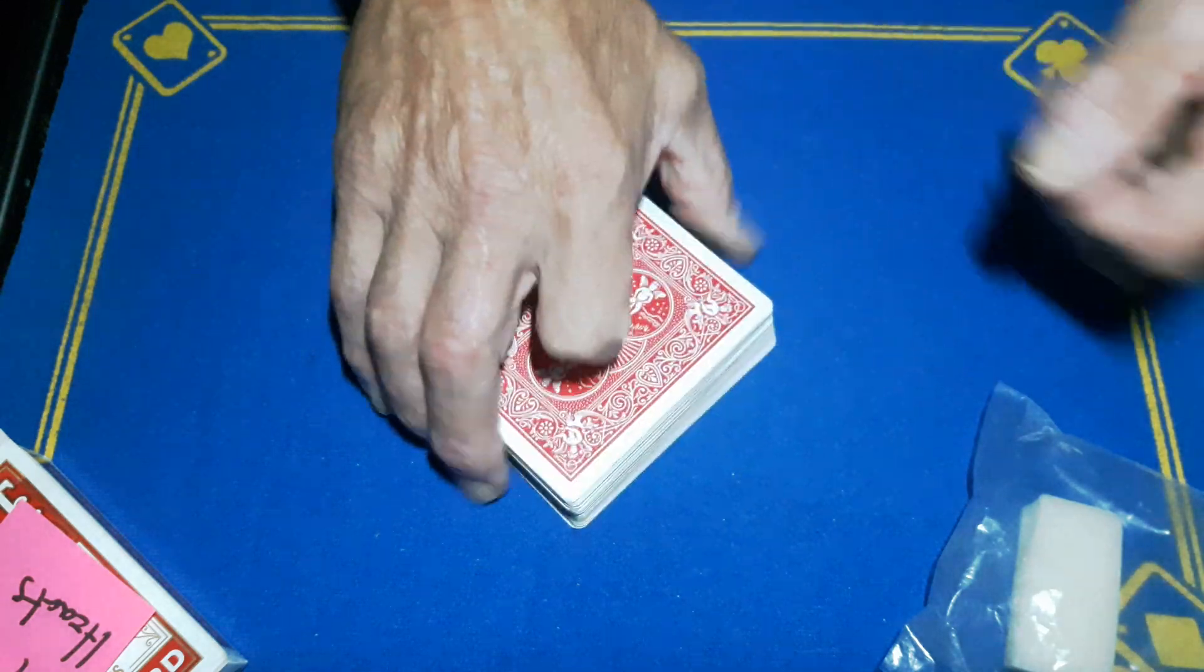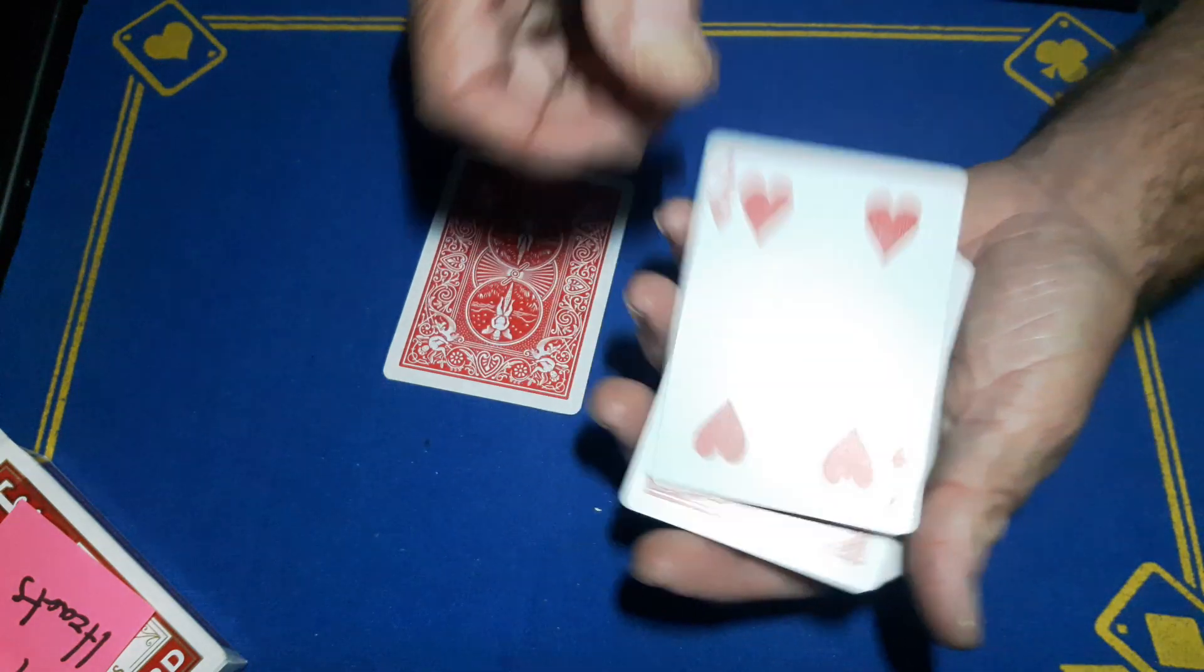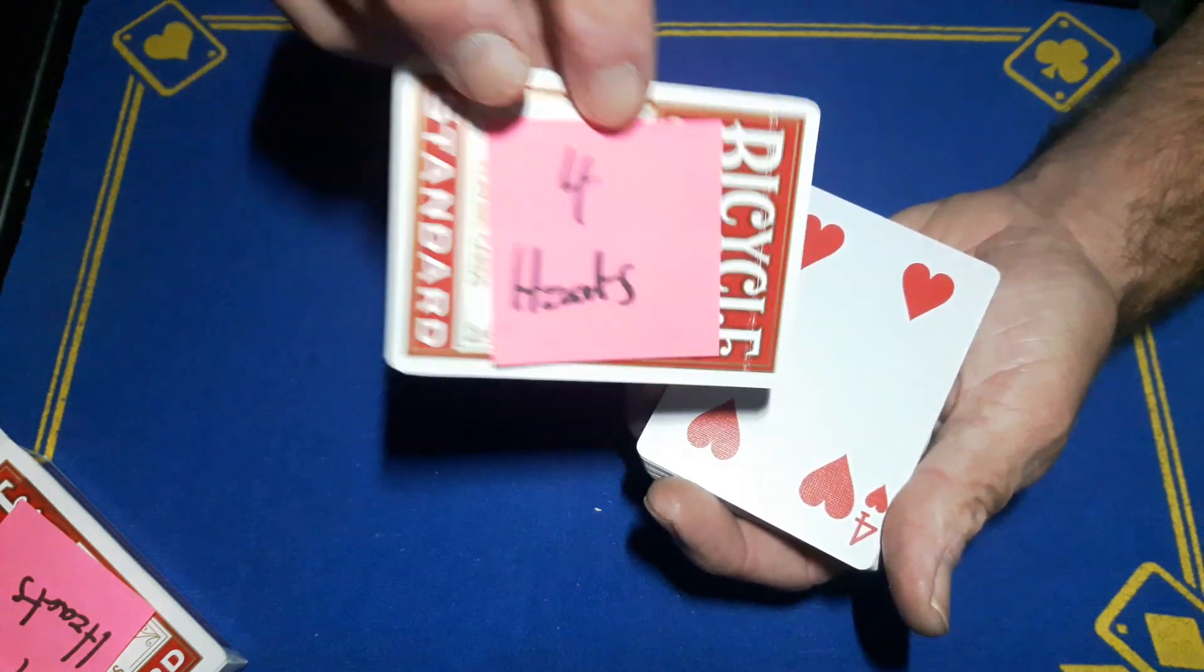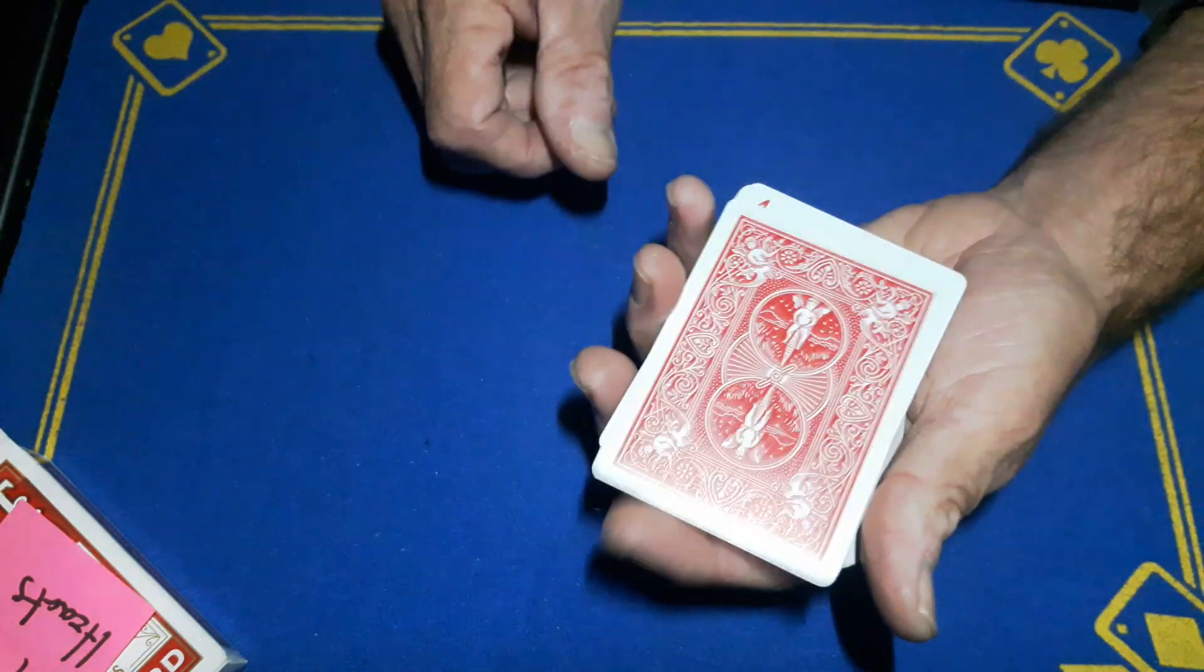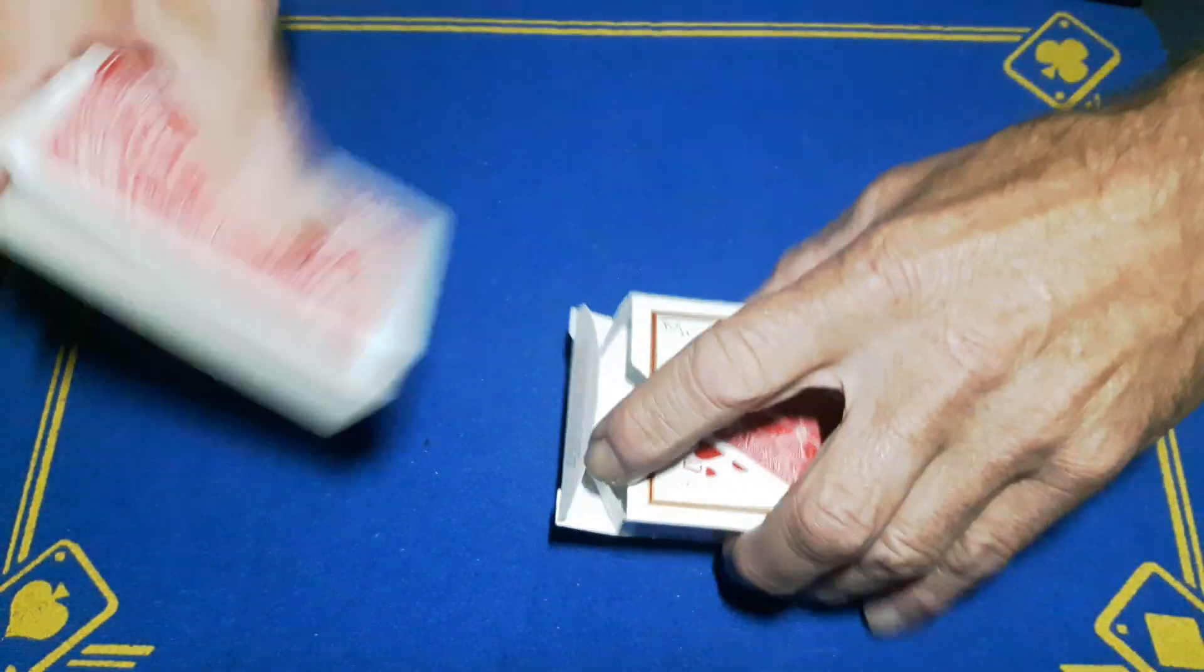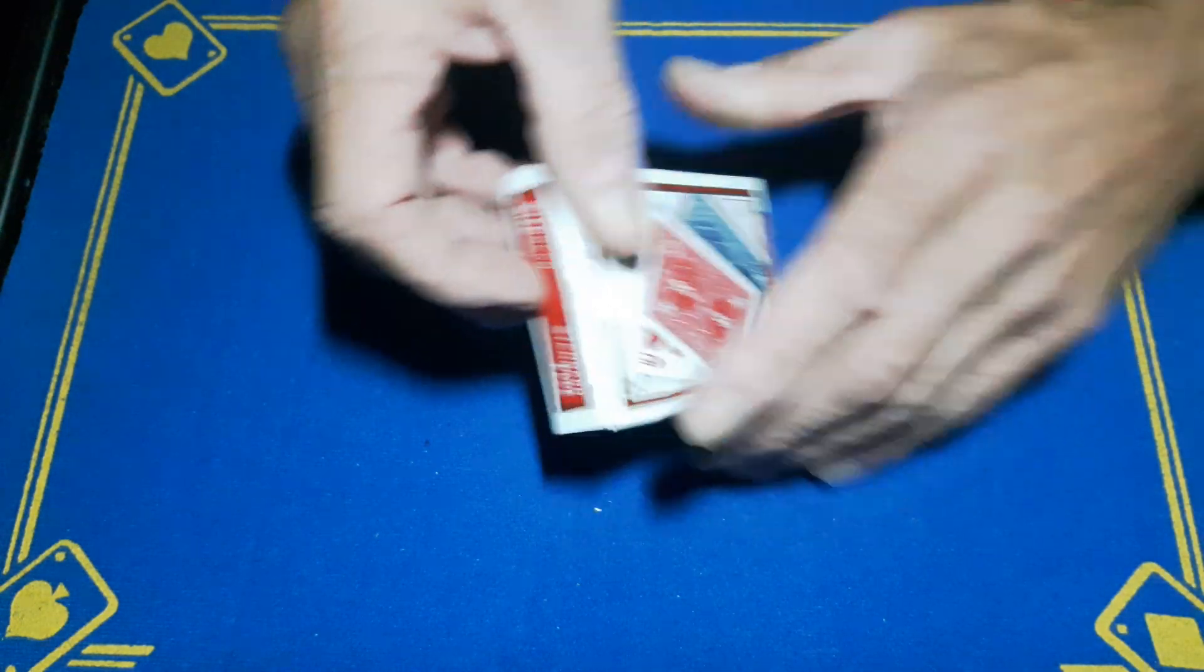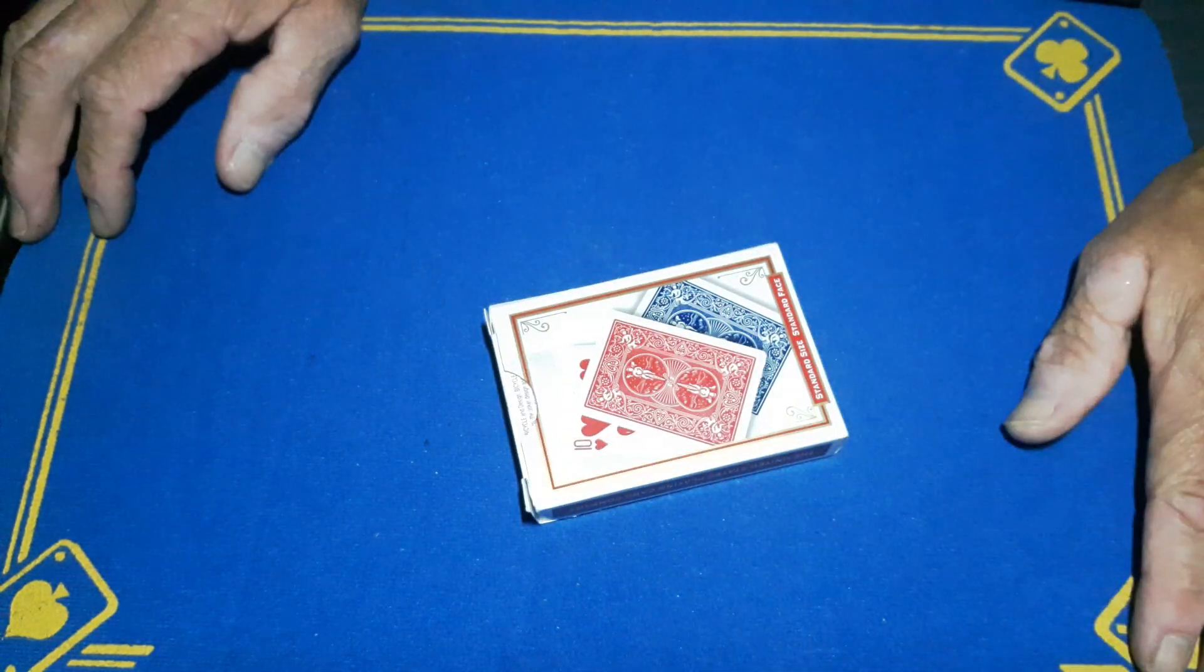But it works well enough to hide it. You could do a block push off, but I rely on gimmicks to help me out. So you're going to have your four of hearts, your prediction on the top of the deck face up, followed by your top of the box gaff on top of that. This can all go in the box with your gimmick here, and you're good to go.